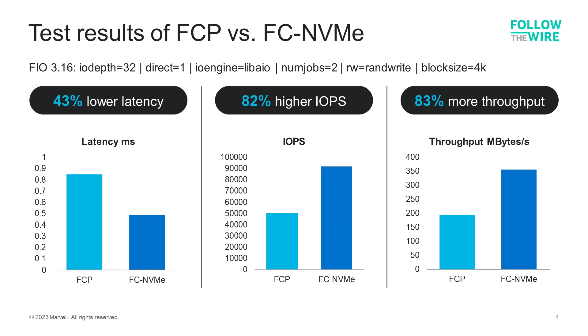In the middle chart, you can see that IOPS are increased by 82%, and on the right you can see that bandwidth was increased by 83% when using FC-NVMe for the same reasons.